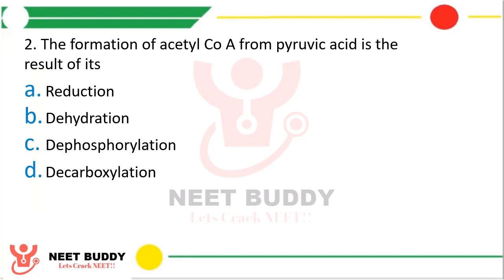Question 2: The formation of acetyl-CoA from pyruvic acid is a result of — option A reduction, option B dehydration, option C dephosphorylation, or option D decarboxylation. The correct answer is option D, decarboxylation. That is why acetyl-CoA is a two-carbon compound whereas pyruvic acid is a three-carbon compound — one carbon is removed by decarboxylation.